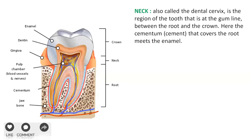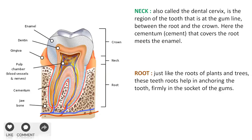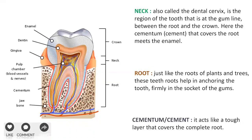Just like the roots of plants and trees, teeth also have roots. These roots help in anchoring the tooth — that is, fixing it firmly in the socket of the gums. The different types of teeth have a different number of roots: incisors, canines and premolars have one root, whereas the molars have two or three roots. At the root of the tooth is a bone-like material called the cementum, which acts like a tough layer of connective tissue that covers the complete root.